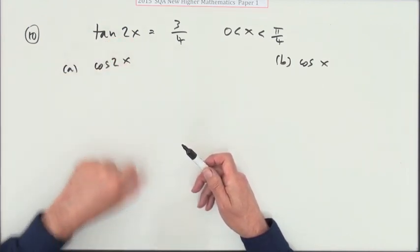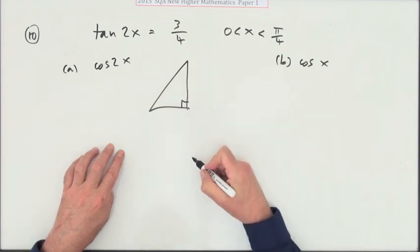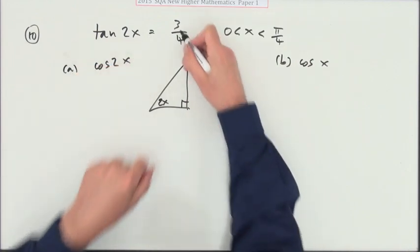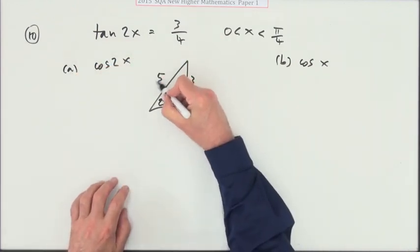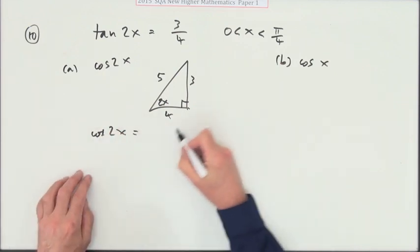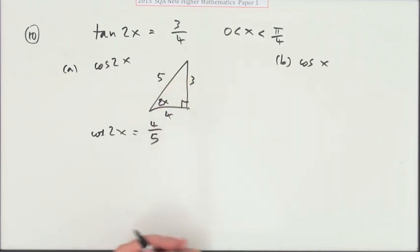Well, notice the 2x's are the same angle, so you can just generate that from your triangle. If the tangent is 3/4, opposite over adjacent, then that makes that a 3-4-5 triangle. And straight away, the cos of 2x will be the adjacent over the hypotenuse, which is 4/5.